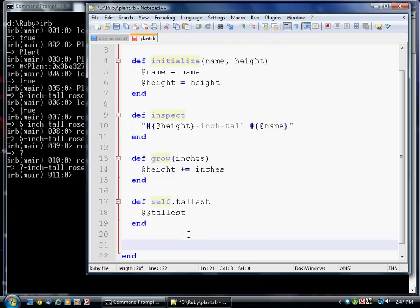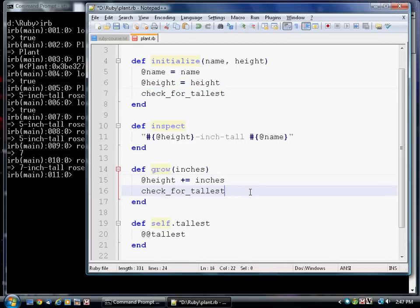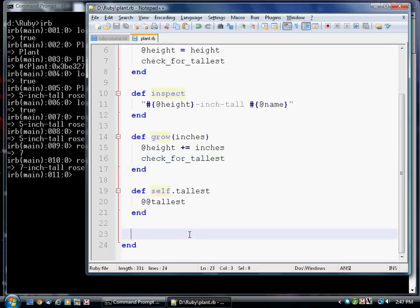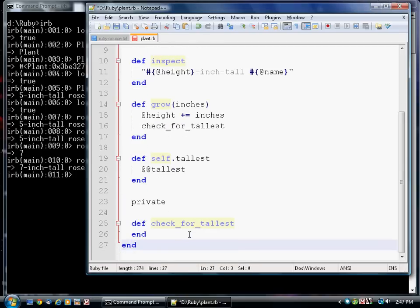Now how do we update this variable at the appropriate times? Well, there are two conditions which allow something to be the new tallest plant. One is that we've just created a plant. So that's one place where we have to check whether it's the new tallest. The other possibility is when the plant grows, it might be the new tallest plant.